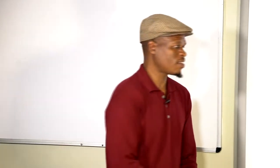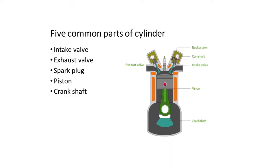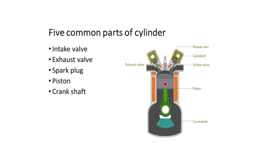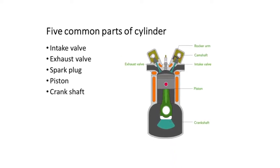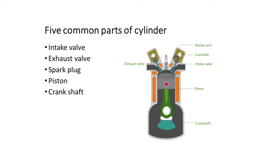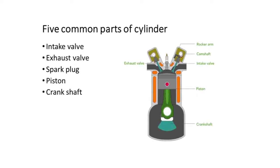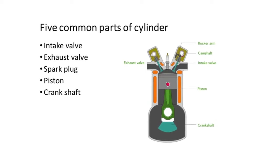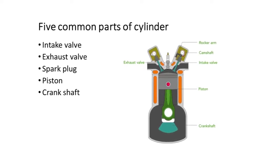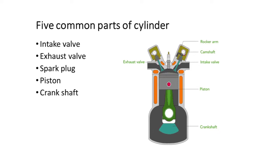There are five common parts of your cylinder: you have your intake valve, your exhaust valve, your spark plug — which ignites and generates fire into the combustion — your piston, and your crankshaft. These are the major components that make all the combustion happen inside the engine.